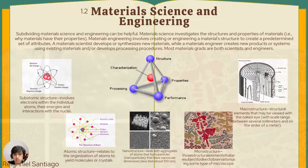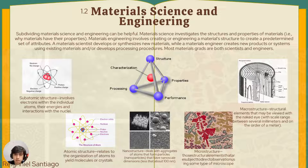Here you can see the different structures of materials: the subatomic structure, which involves electrons; next is atomic structure; then nanostructure; then microstructure; and finally macrostructure. Macrostructure refers to structural elements that may be viewed by the naked eye — meaning we can see them without using microscopes or any other device.